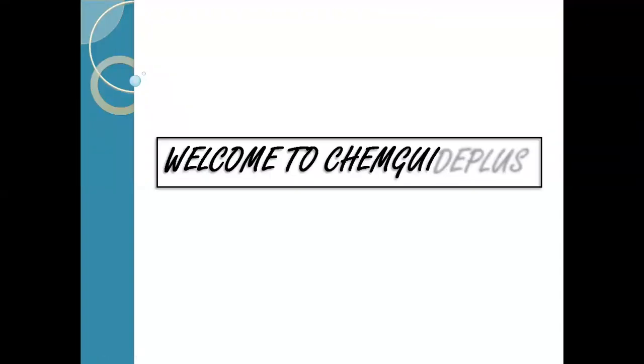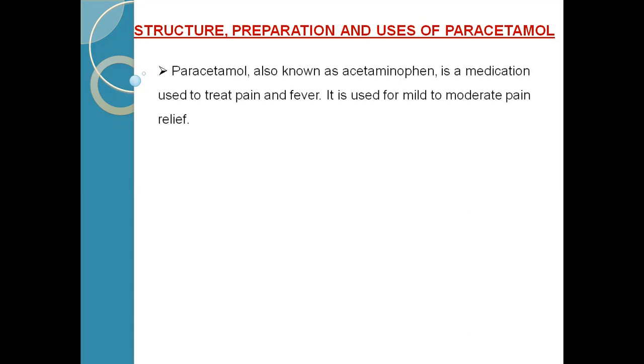Hi everyone, welcome to ChemGuide Plus channel. Today we are going to see structure, preparation, and uses of paracetamol. Paracetamol, also known as acetaminophen, is a medication used to treat pain and fever. It is used for mild to moderate pain relief. Let us see the structure of paracetamol.